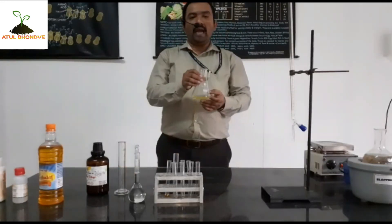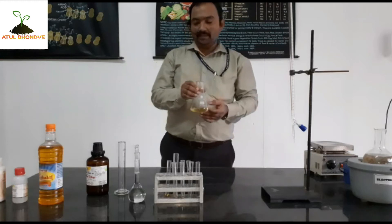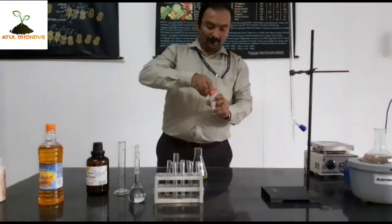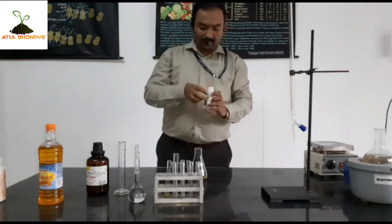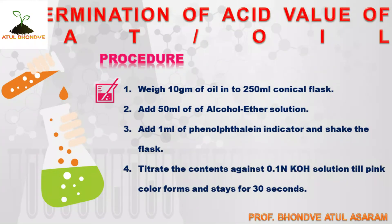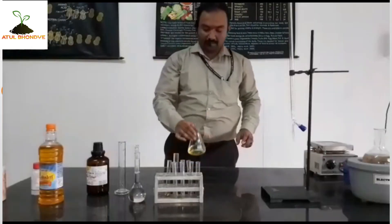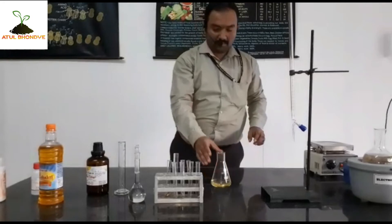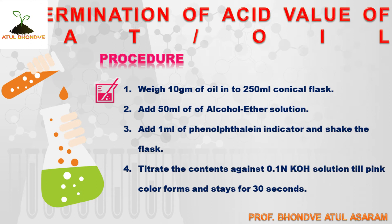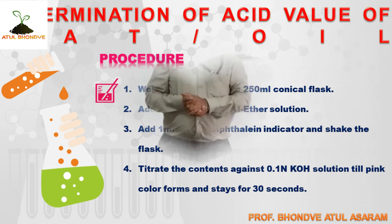To this conical flask, add 1 drop of phenolphthalein indicator. We are using a readymade phenolphthalein indicator for today's practical. So, as per the procedure: we added 10 g of oil sample into the 250 ml conical flask, then 50 ml of neutralizing mixture — the alcohol-ether mixture — and a few drops of phenolphthalein indicator.